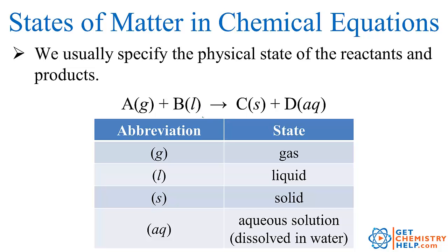Now oftentimes in a chemical equation we also want to specify what was the physical state of those reactants. So for example, on that last equation, that methane, was that methane gas or was that liquid methane? So the way we specify this state is we put an abbreviation after it in parentheses. So we put G if it was a gas.